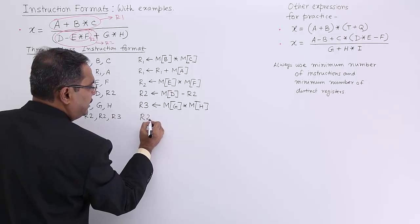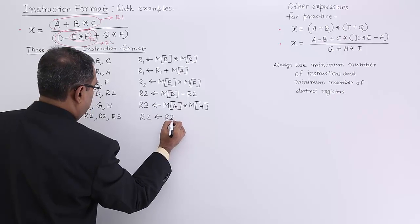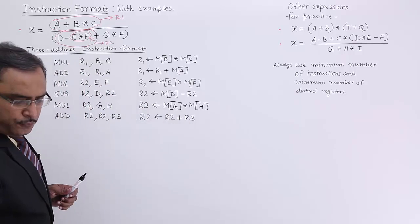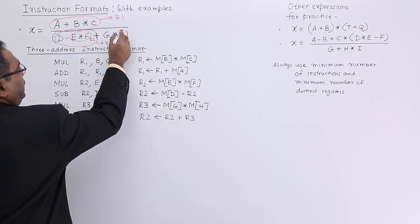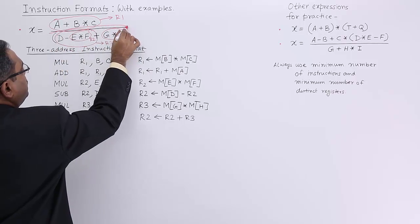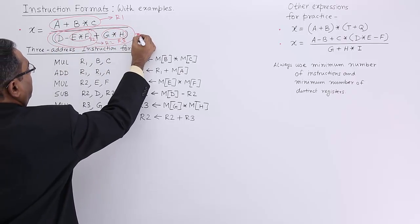R2, R2, R3. That means in the comment I can write R2 and there is add, there is R3. Now this full denominator, initially it was in R3, now this full denominator is now in R2.